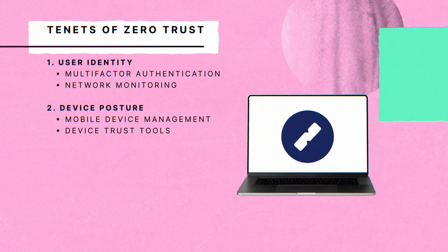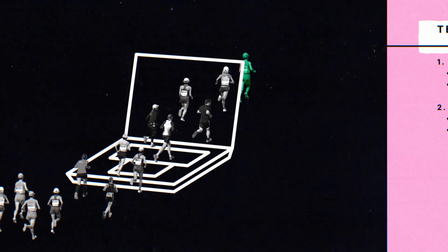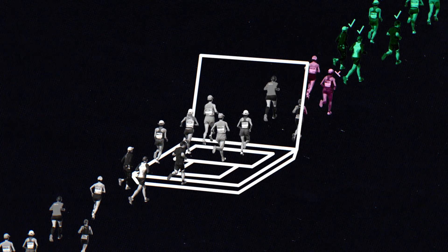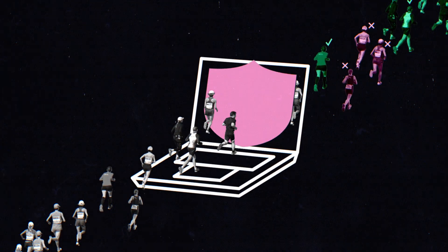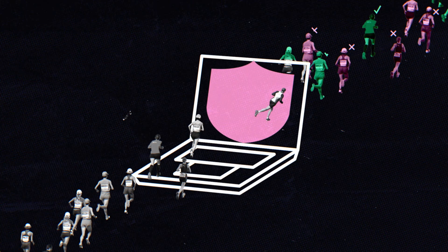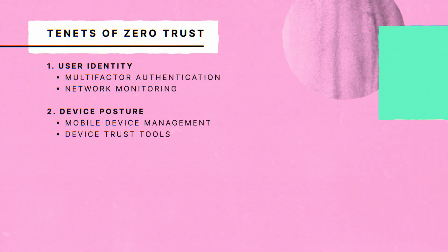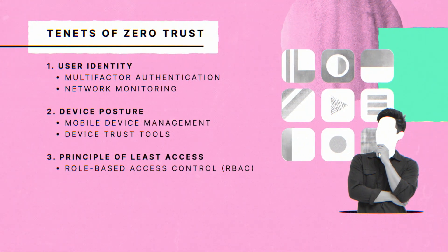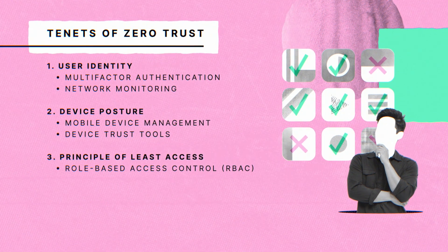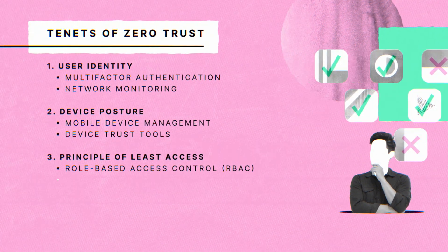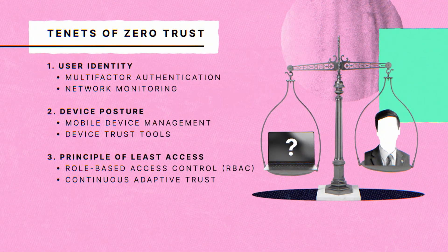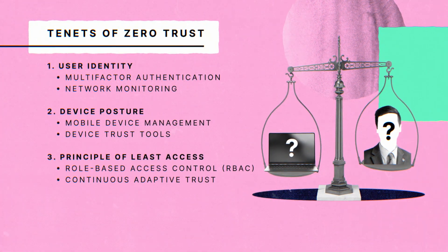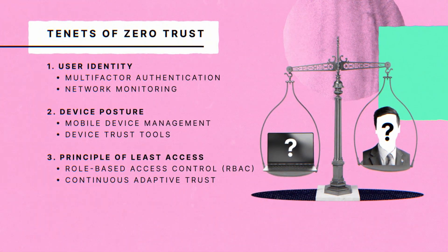Device trust tools like Collide help solve those problems. Finally, even with tools that solve for user authentication and device posture, hackers sometimes get in. At that point, the company's goal is to limit the damage an attacker can do. So the final tenet of Zero Trust is the principle of least access. One way of solving that is role-based access control, only letting Joe access the resources he needs to do his job. Another is continuous adaptive trust, in which the company decides what Joe can do based on how confident they are about his identity and device posture.